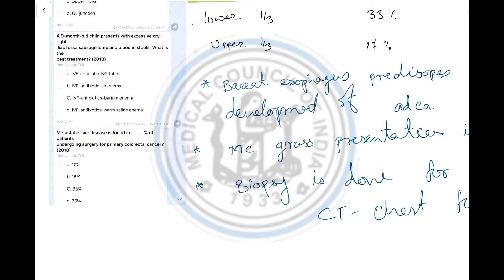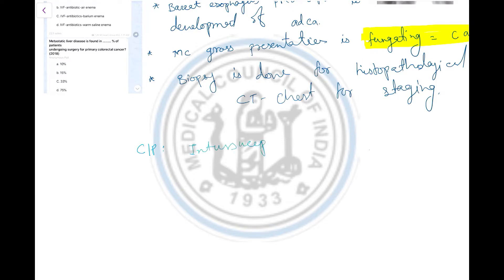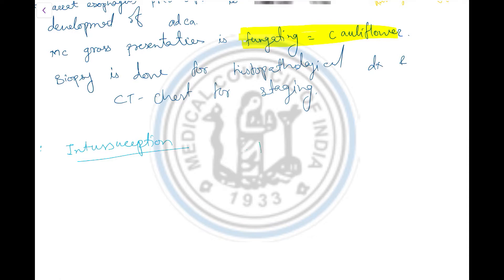The next question: a 9-year-old boy presents with excessive crying, light elfosa, such lump, and blood in the stool. The options are: antibiotics, IVF antibiotic air enema, antibiotic barium enema, and antibiotic warm saline enema. According to the baby's complaint, the diagnosis is intussusception. Intussusception means intestine under intestine. Look at this picture to understand.